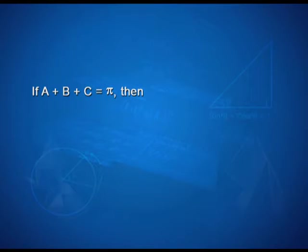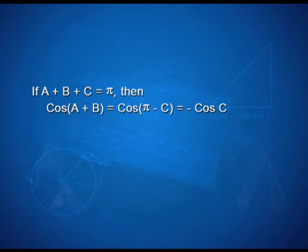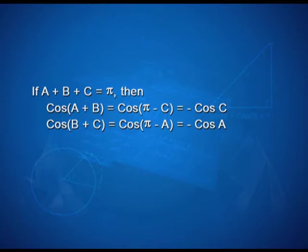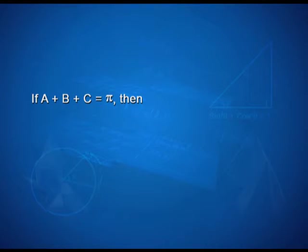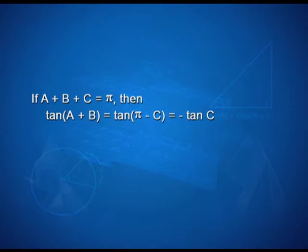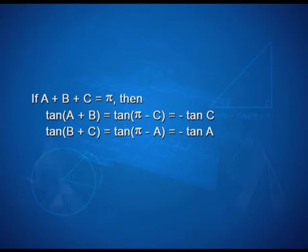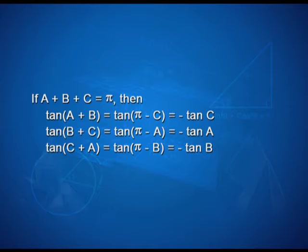Third, if A plus B plus C is equal to pi, then cos of (A plus B) is equal to cos of (pi minus C), that is minus cos C, and cos of (C plus A) is equal to minus cos B. Also, tan of (B plus C) is equal to tan of (pi minus A), that is minus tan A, and tan of (C plus A) is equal to tan of (pi minus B), that is minus tan B.